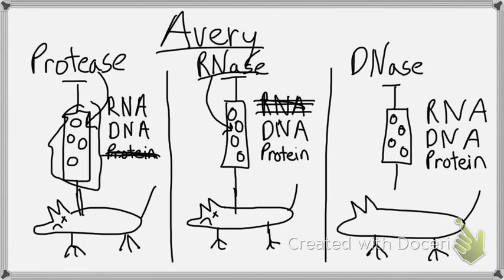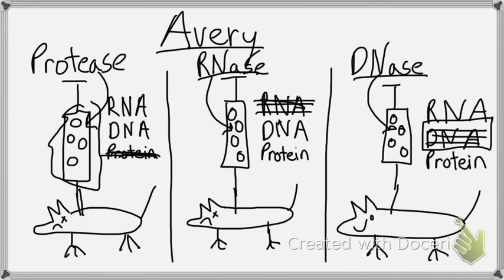At this point, he can be fairly confident that DNA is the genetic material, or that transforming factor. But he has to test it to be sure. He takes his DNase, which kills DNA, and adds it to his syringe of bacteria. The DNase does its job and kills the DNA. He injects the mouse, and the mouse lives — proving that DNA is the genetic material.